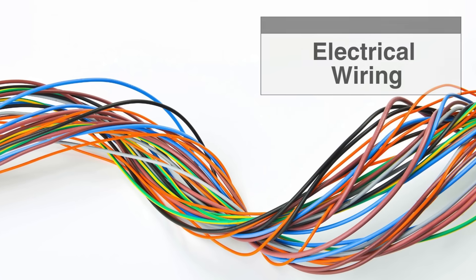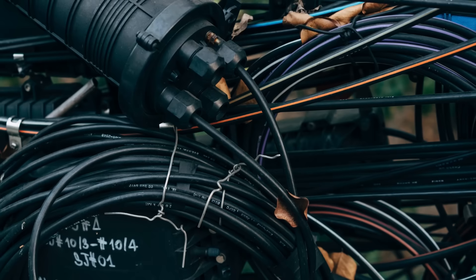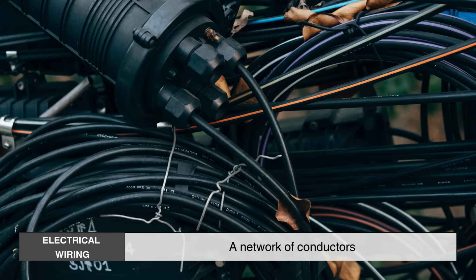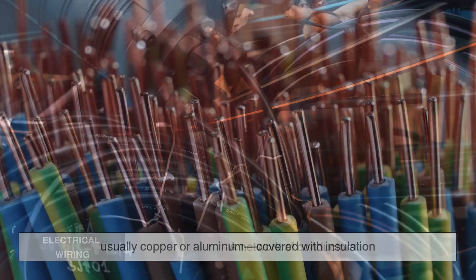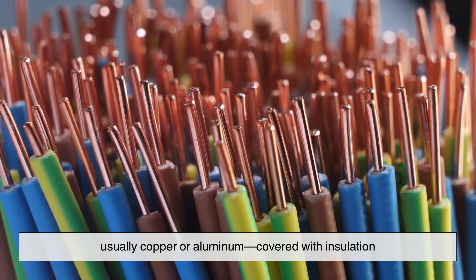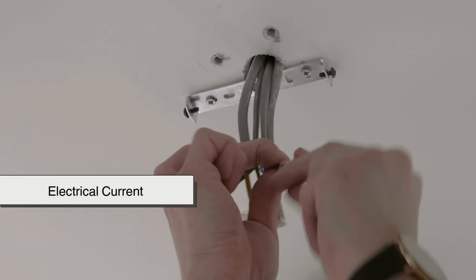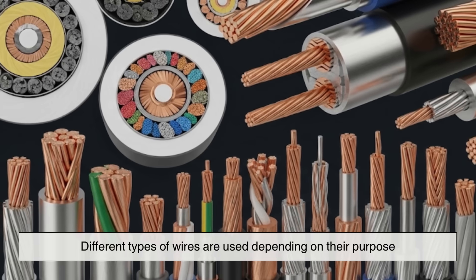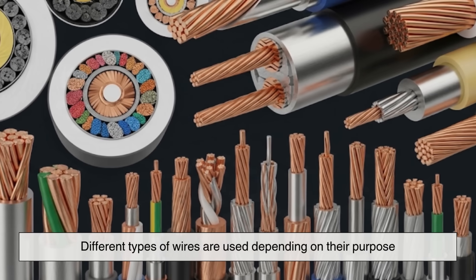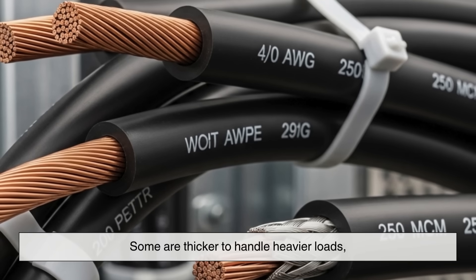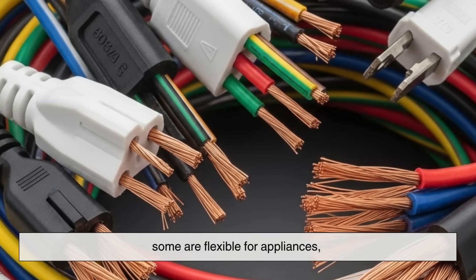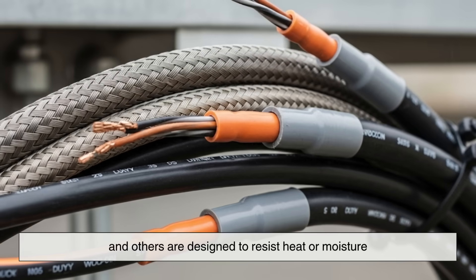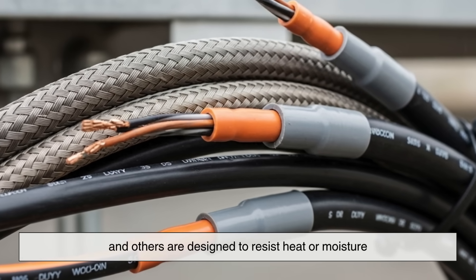So, what is electrical wiring? At its core, electrical wiring is just a network of conductors, usually copper or aluminum, covered with insulation. These wires carry electrical current safely to where it's needed. Different types of wires are used depending on their purpose. Some are thicker to handle heavier loads, some are flexible for appliances, and others are designed to resist heat or moisture.